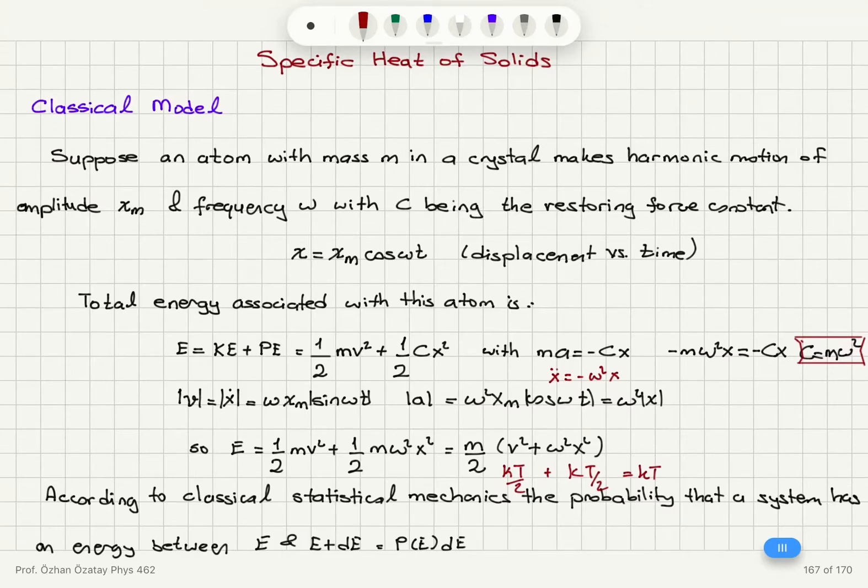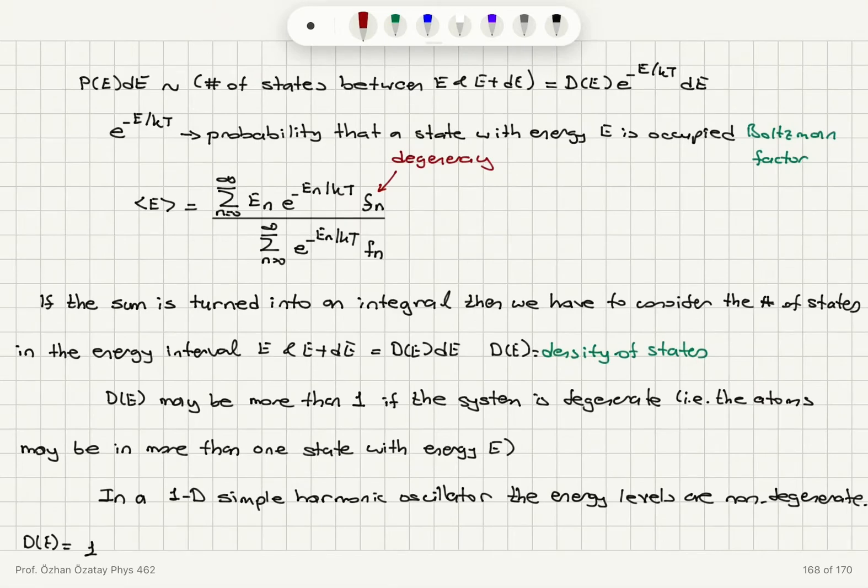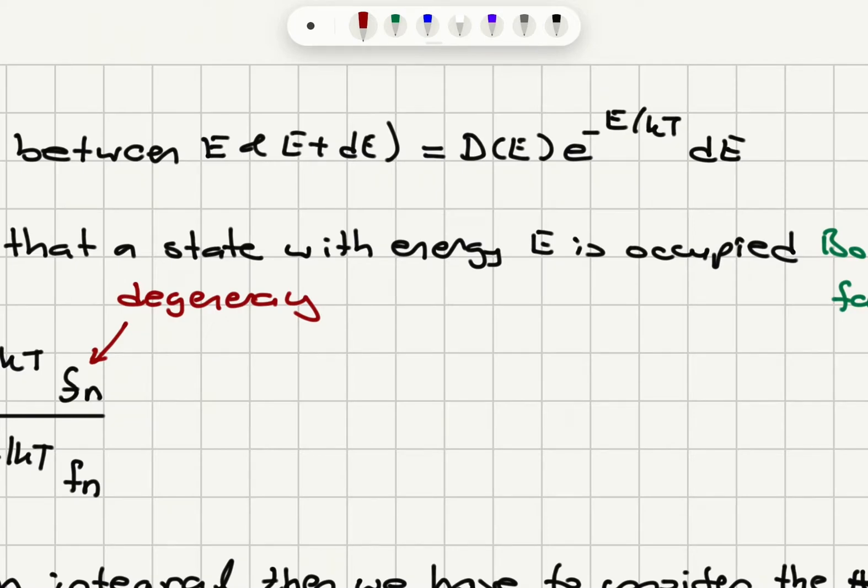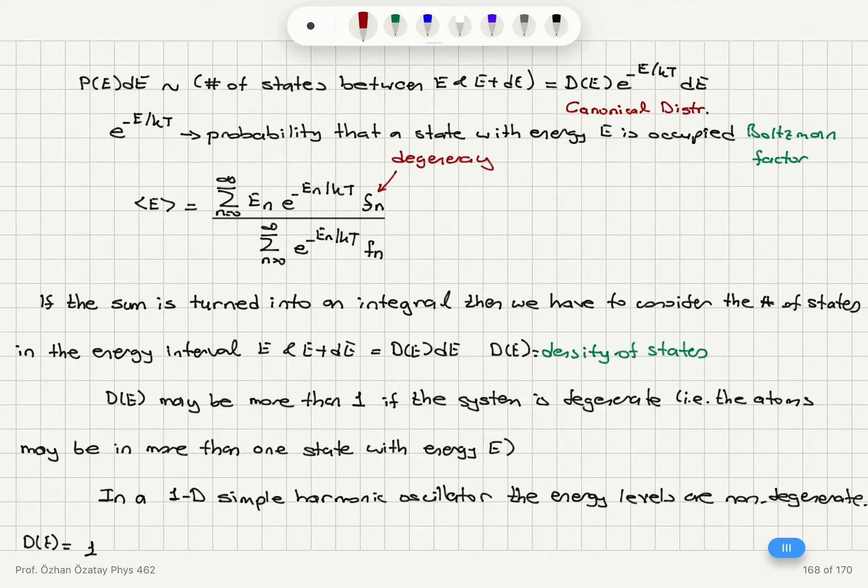We can do this calculation explicitly according to statistical mechanics. The probability that the system has an energy between E and E plus dE is proportional to the number of states with energies E to E plus dE. We can write this as density of states dE, e to the minus E over kt, that's the Boltzmann factor dE. This is canonical distribution because you have one atom in thermal contact with the rest of the crystal, so with a huge reservoir.